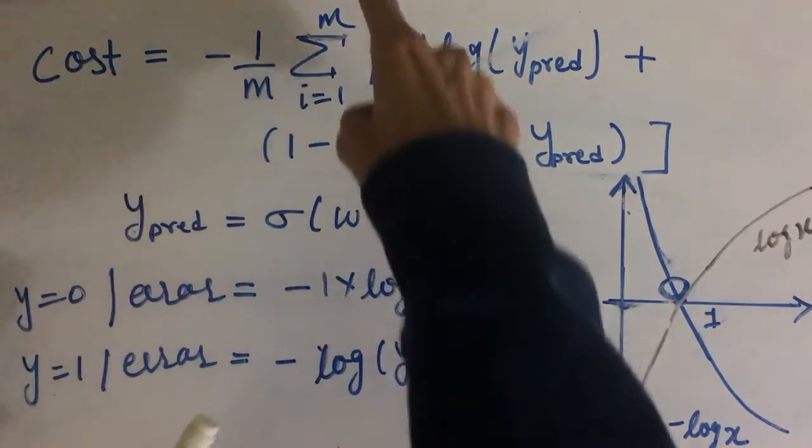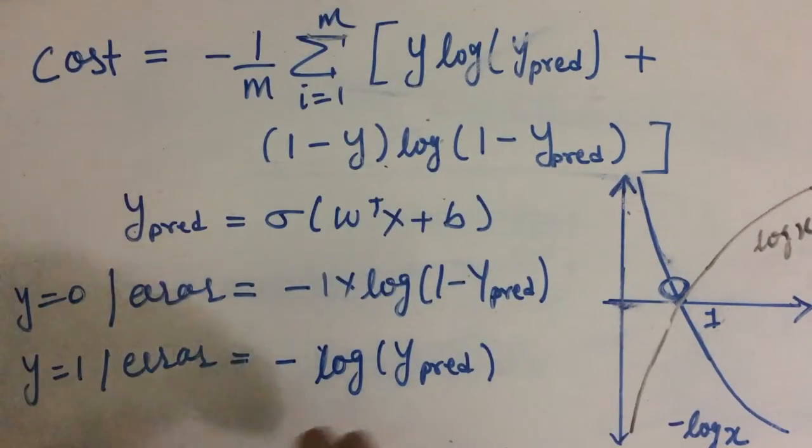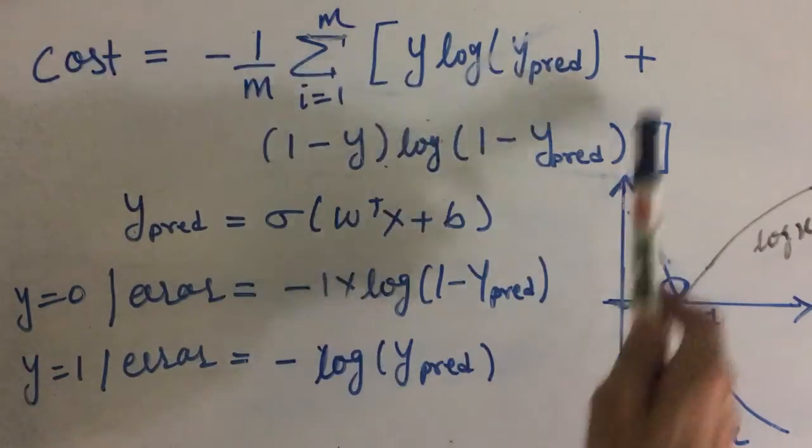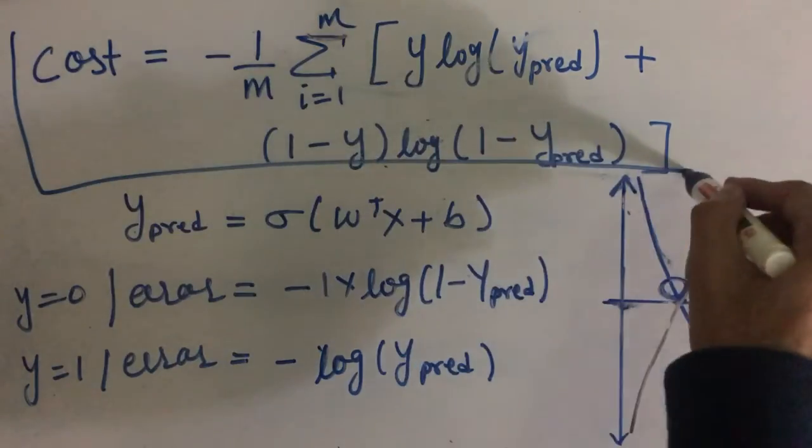Now if we have m number of observations, then we just take the average of all these errors, which will give us the cost function.